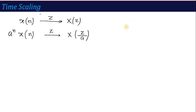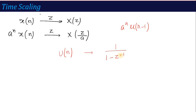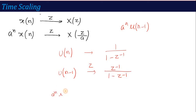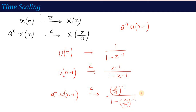Now that we've understood a^n time scaling, suppose you need to calculate the Z-transform of a^n * u(n-1). From the basic: u(n) gives 1/(1 - z^(-1)), then for u(n-1) apply shifting property — shift by -1 means multiply by z^(-1) — giving z^(-1)/(1 - z^(-1)). Now for a^n * u(n-1) apply time scaling: z is replaced by z/a, so z^(-1) becomes a*z^(-1), giving a*z^(-1)/(1 - a*z^(-1)).